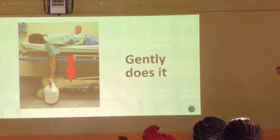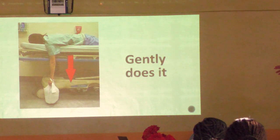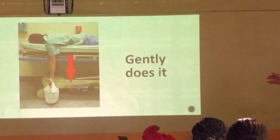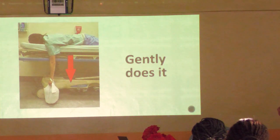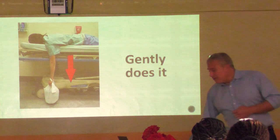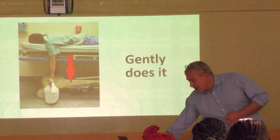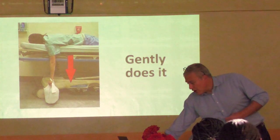Another method of reducing a shoulder dislocation is to lie the patient on their front, give them something appropriate - probably ketamine or a lot of painkillers - and hang weights from their arm. The shoulder can sometimes reduce. Certainly not my favourite method, but if you're desperate it's worth a try.